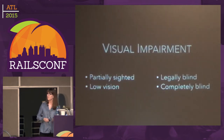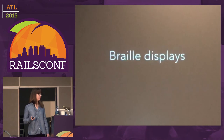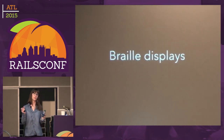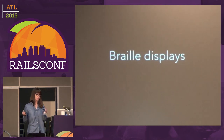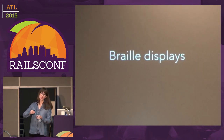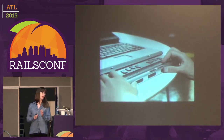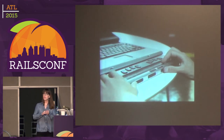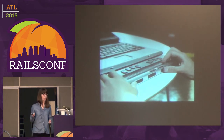Let's kick it off with visual impairment. There are four categories that we generally think of. Two of the adaptive technologies include braille displays. Braille displays are an extension of your keyboard — they provide a small mouse movement that you can navigate with your hands, and they also allow you to use the keyboard at the same time while displaying all the text on the website in braille for a blind user.